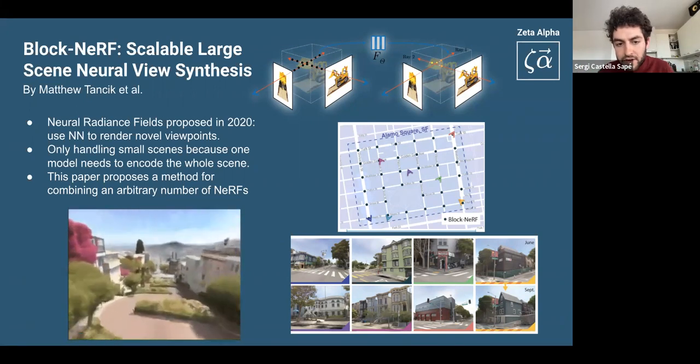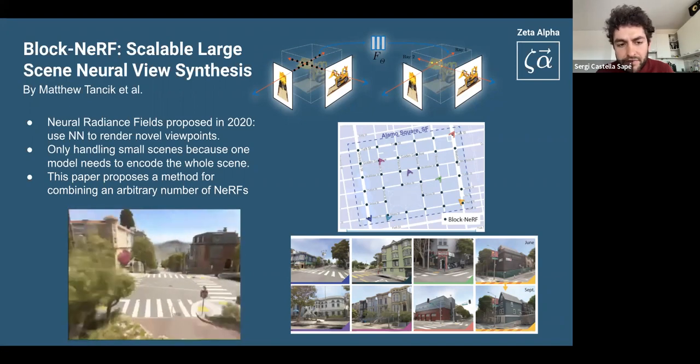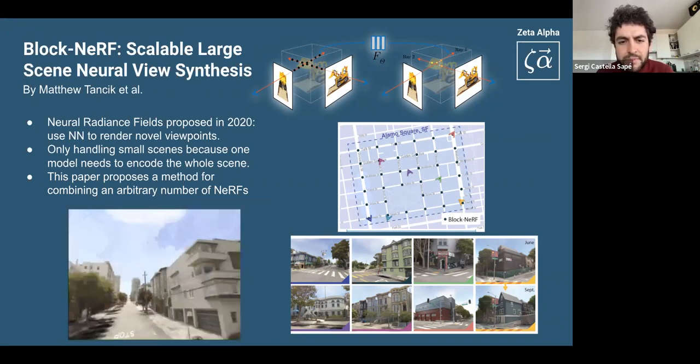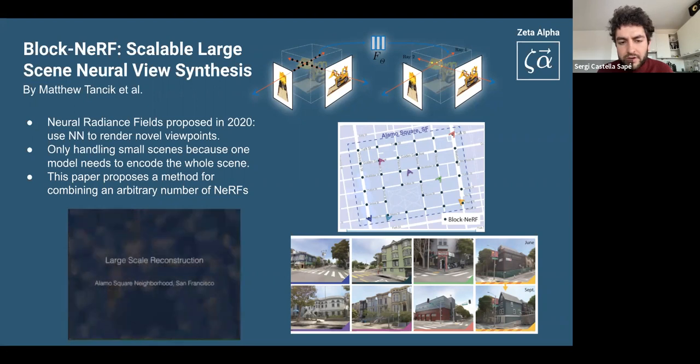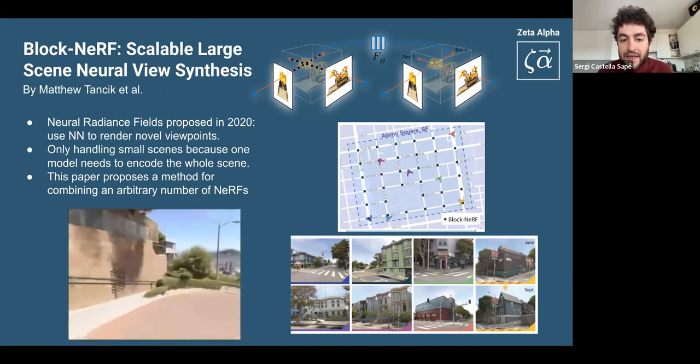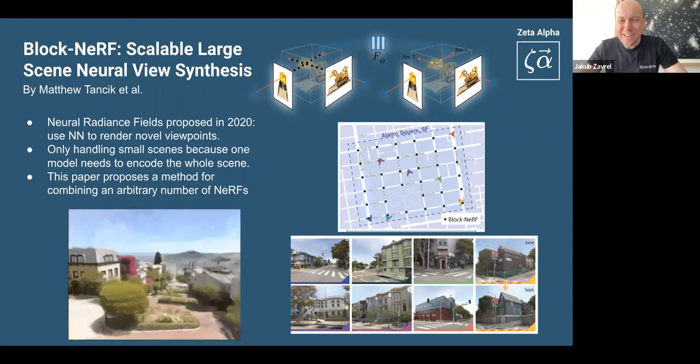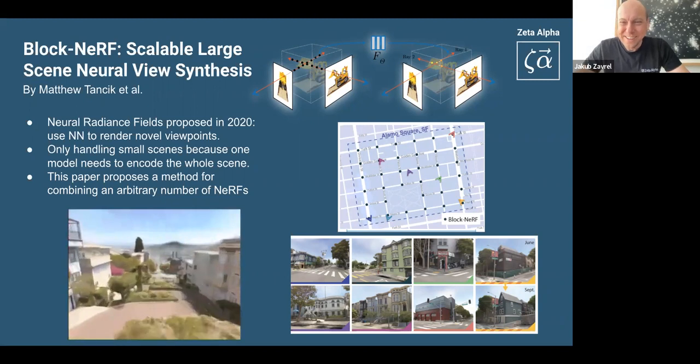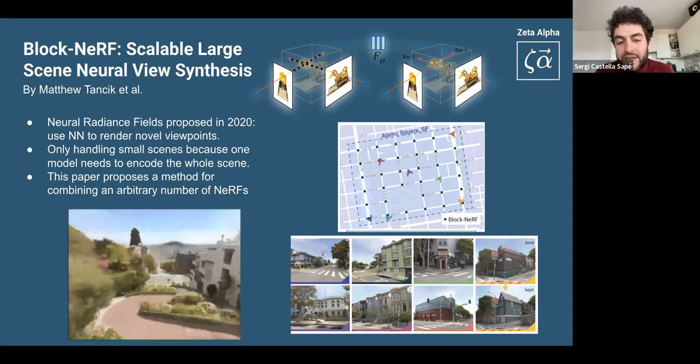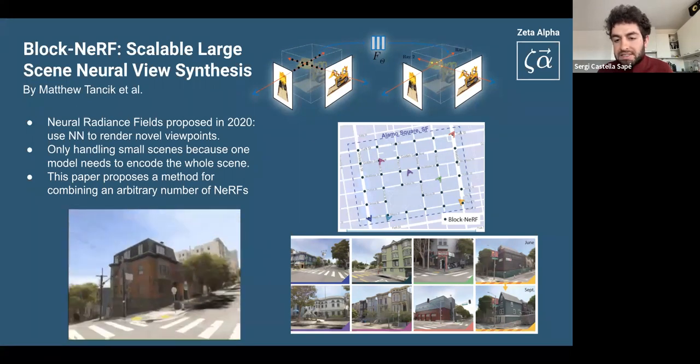So what they do here is they apply the system and they do this Block-NeRF neural radiance fields to sort of merge different models that are trained independently of a large scene. And they built this model of a few blocks in San Francisco. And they collect these dataset of 2.8 million images along with their position. The guys are from Waymo. So they have a lot of cars with cameras driving around there.